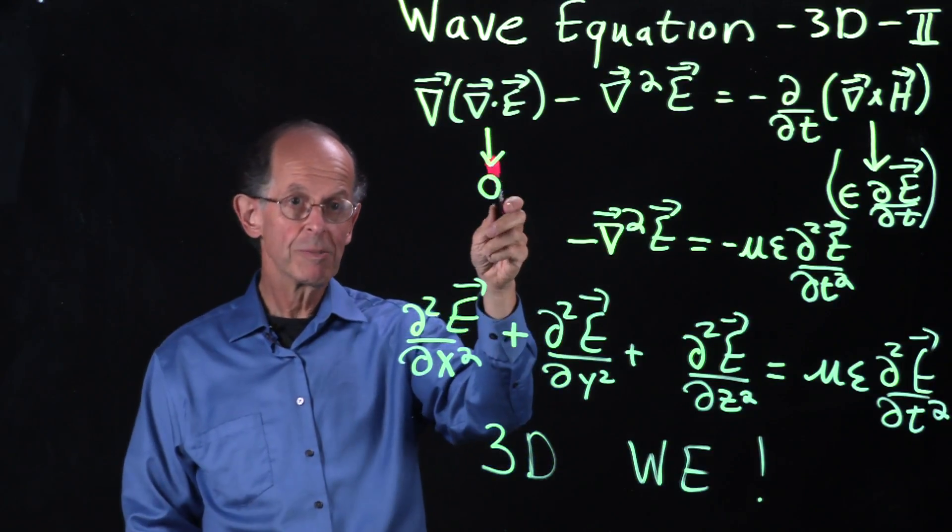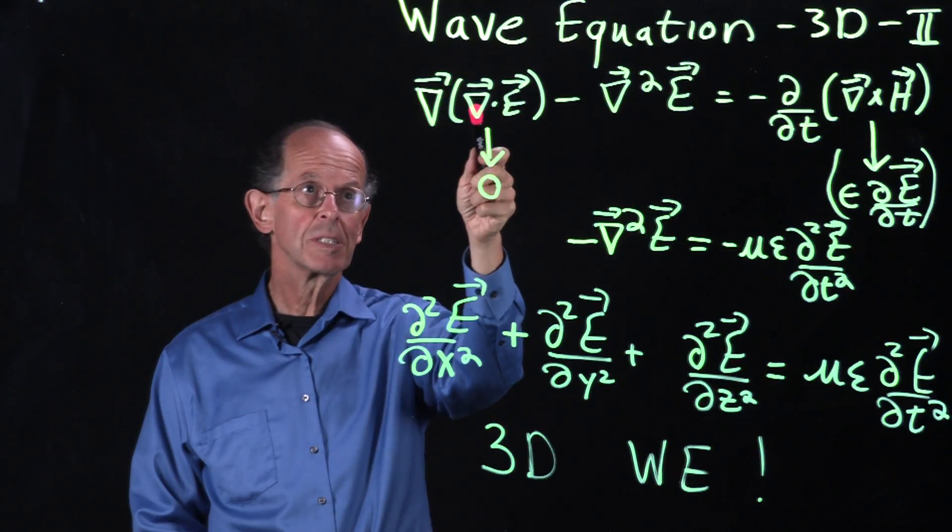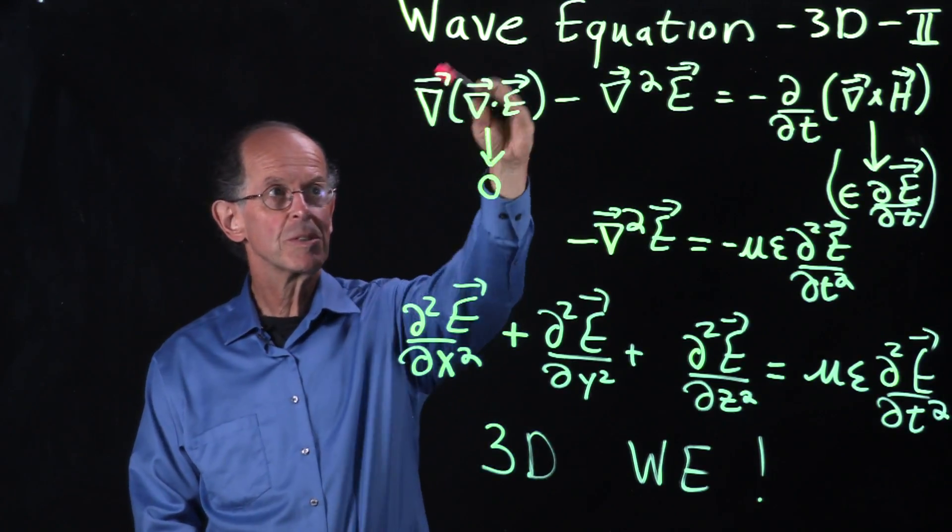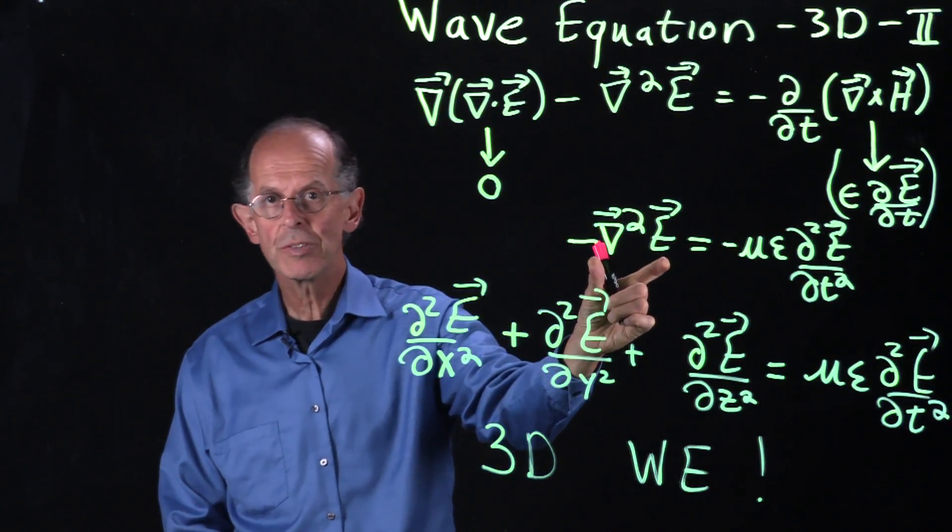We know from Gauss's law that in this case we have no charges, that del dot E is equal to zero. So this term disappears, and we are left with simply minus grad squared of E.